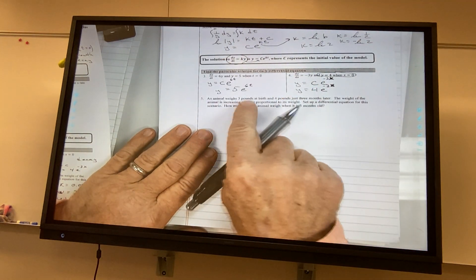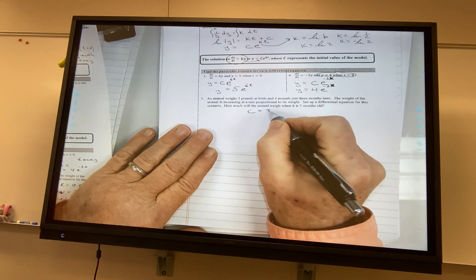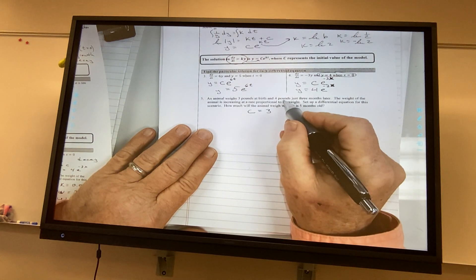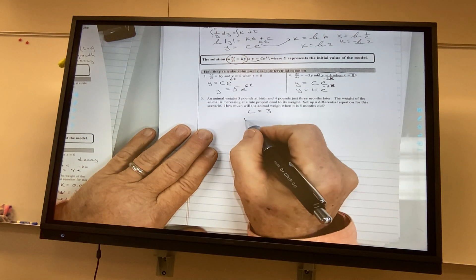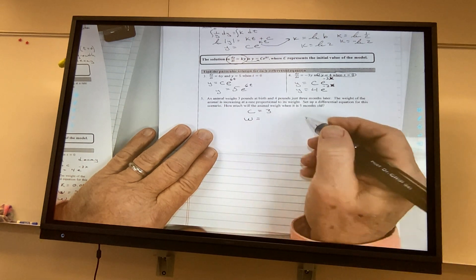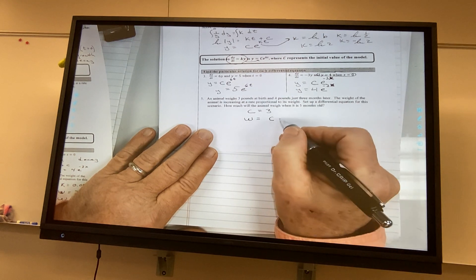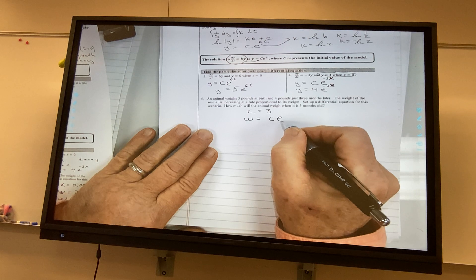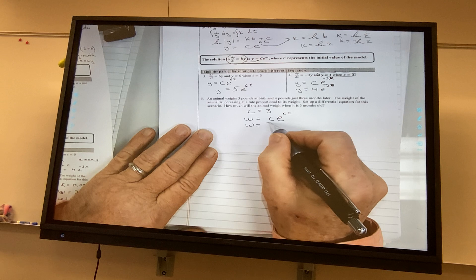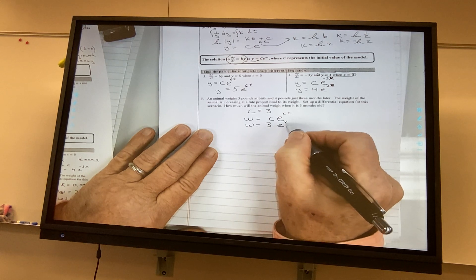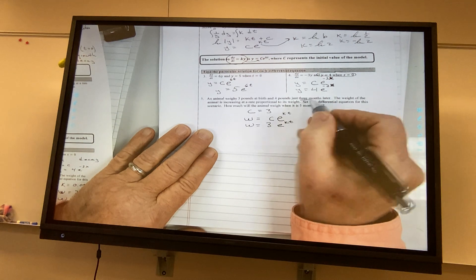It says, an animal weighs 3 pounds at birth. So, c is equal to 3. 4 pounds just 3 months later. So, I'm going to have the weight is equal to c e to the kt power. So, the weight is equal to 3e to the kt power. I'm told that in 3 months, it's now 4 pounds.